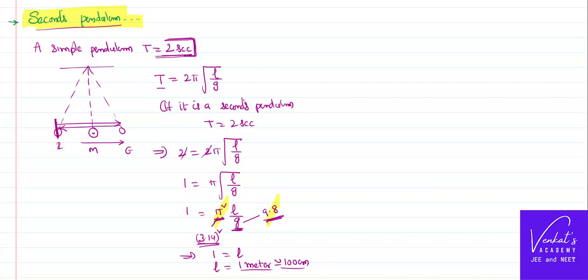So a seconds pendulum is a pendulum whose length is from the point of suspension to the middle of the bob, to the center of mass of the bob. If the length is 1 meter it will take a time of 2 seconds to go and come back and complete one oscillation. That kind of a pendulum is called a seconds pendulum. These seconds pendulums are regularly used in designing the pendulum clock kind of watches.